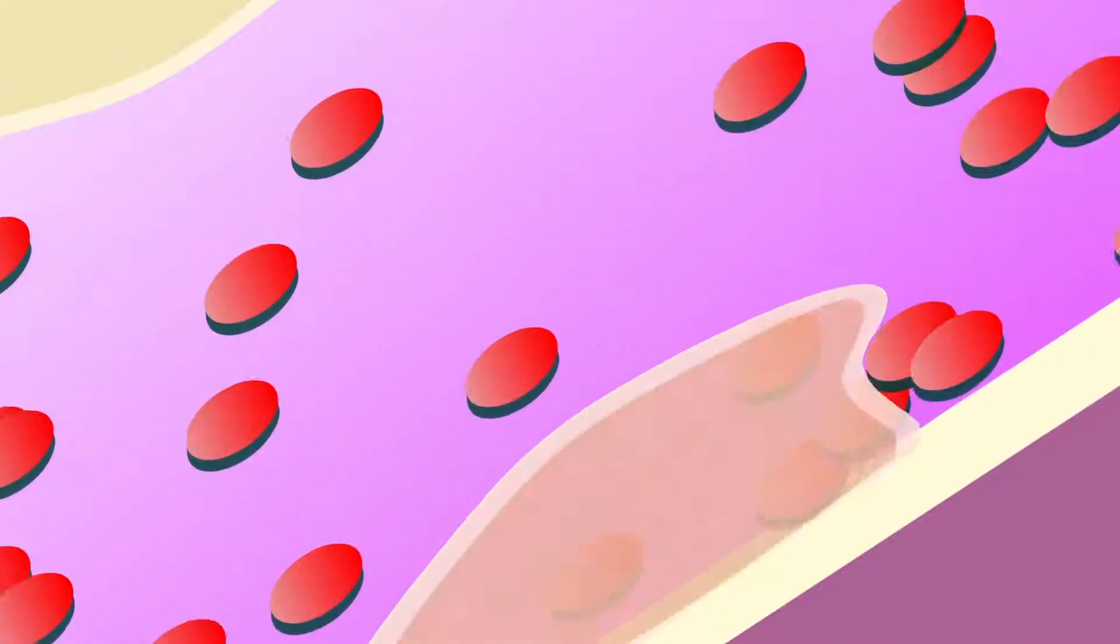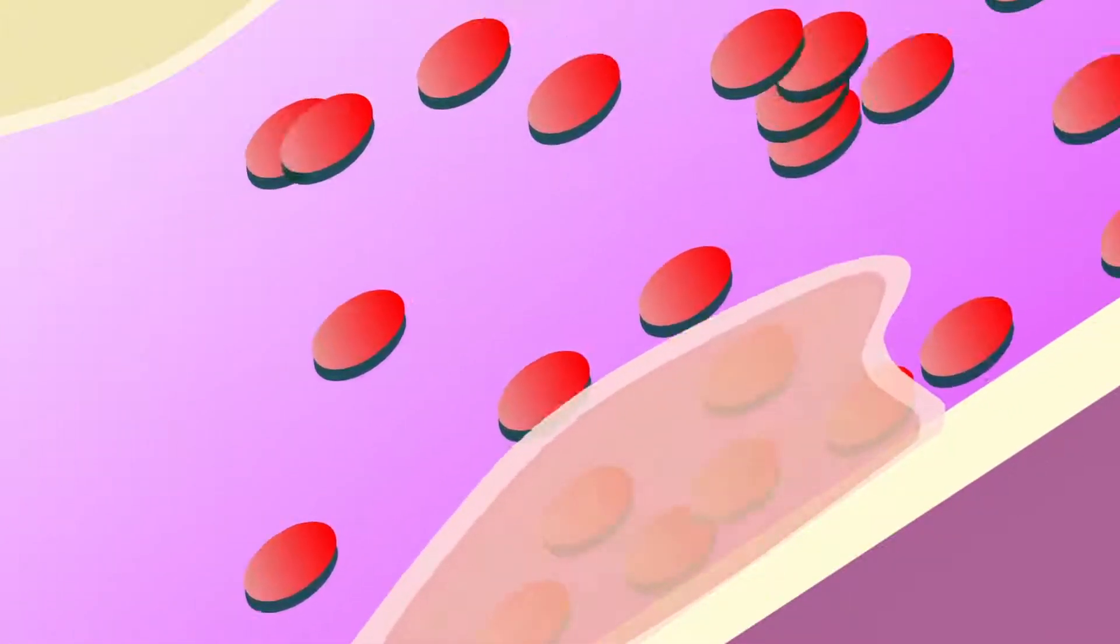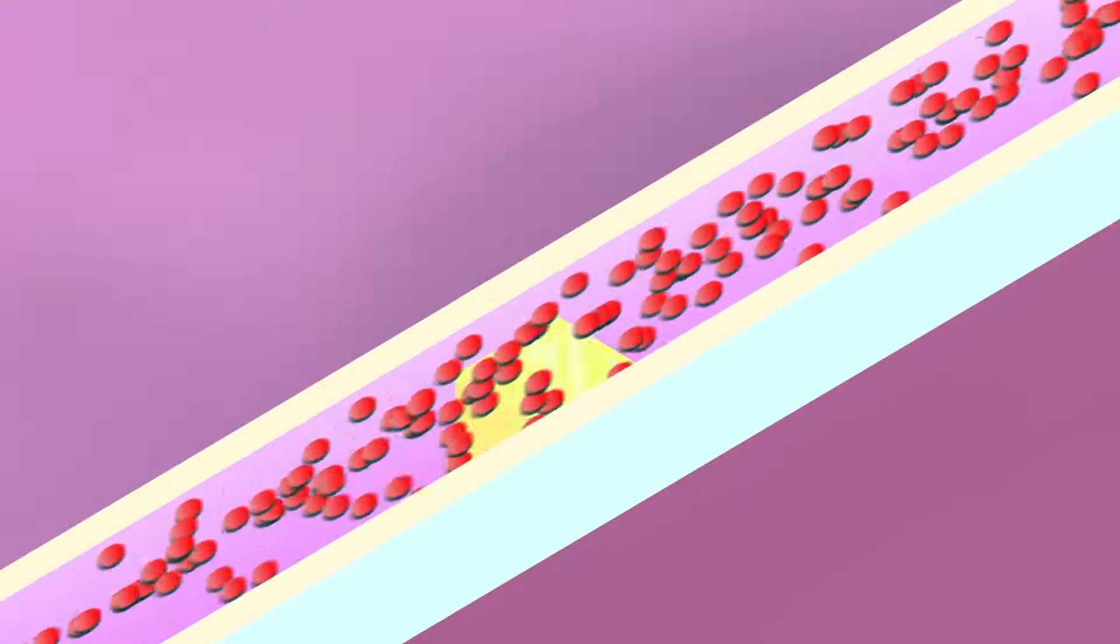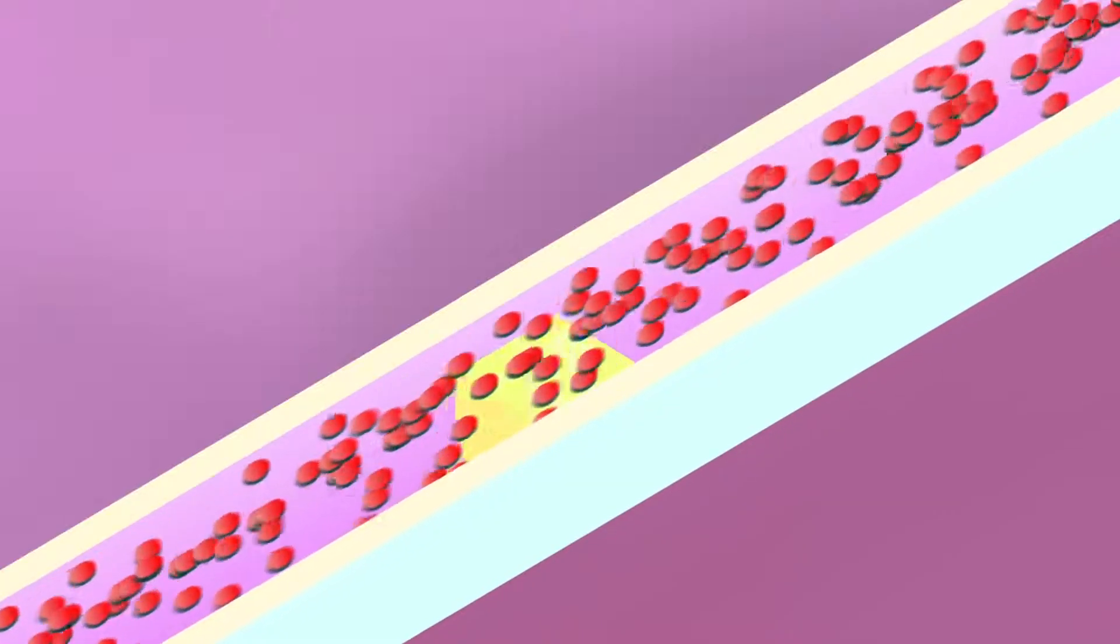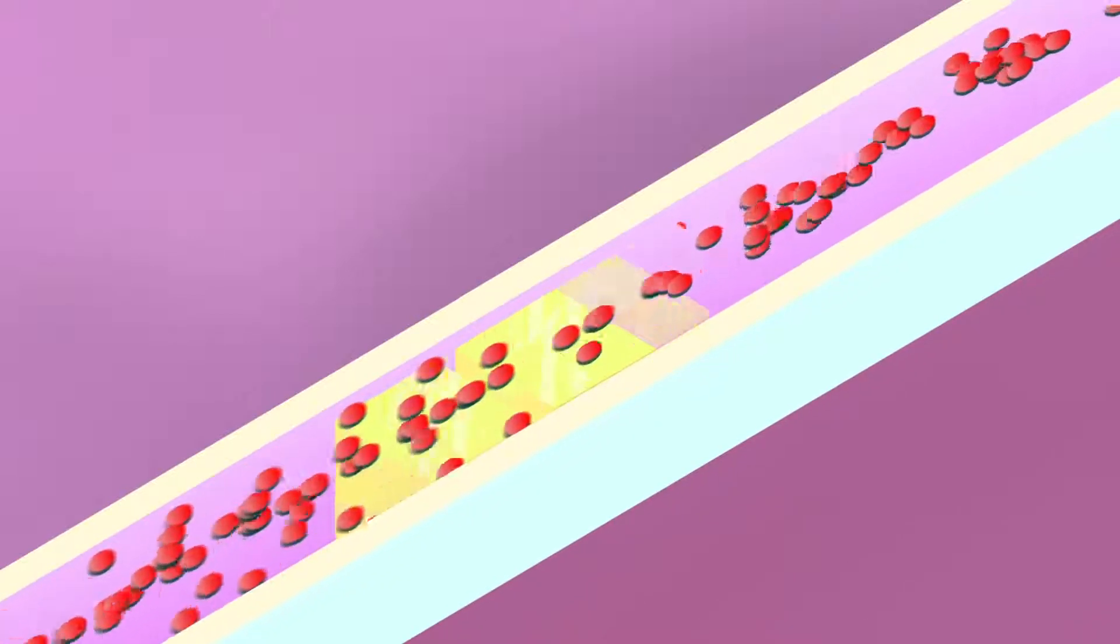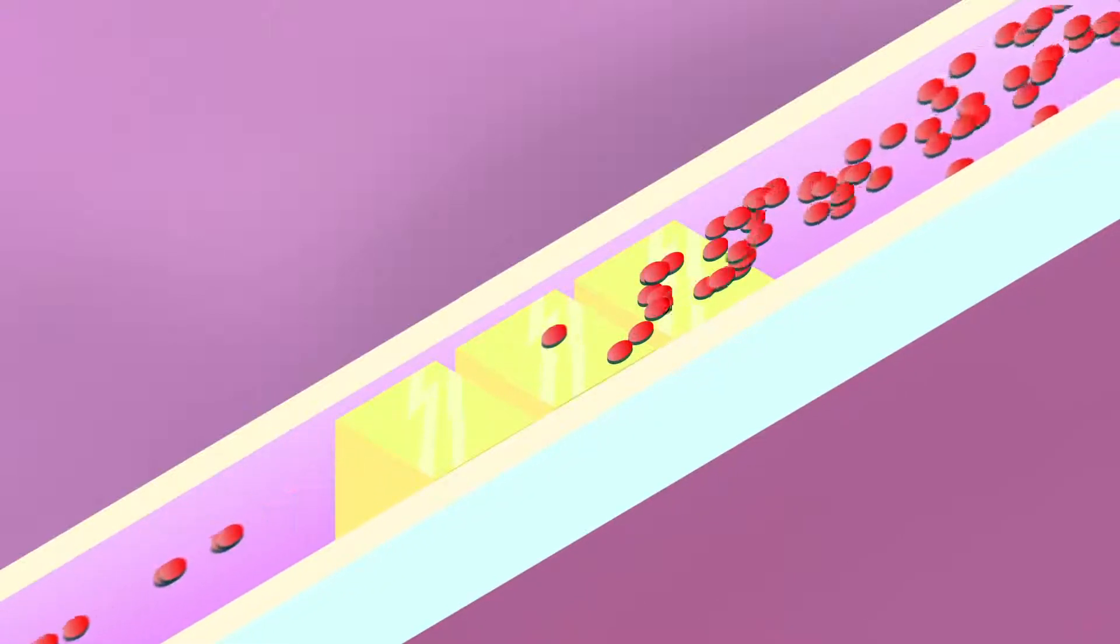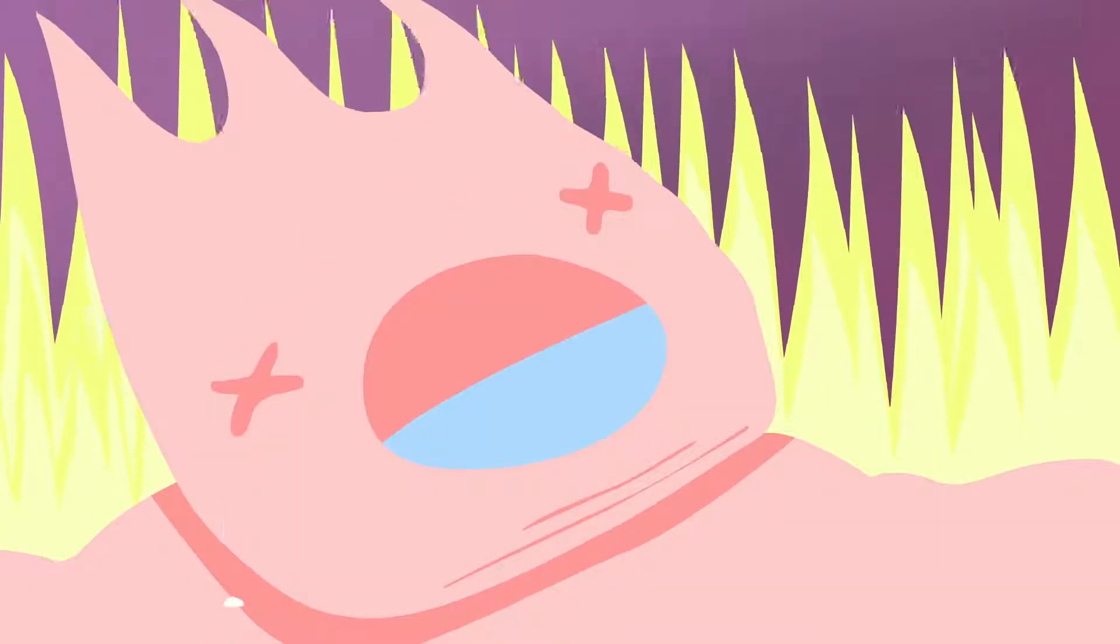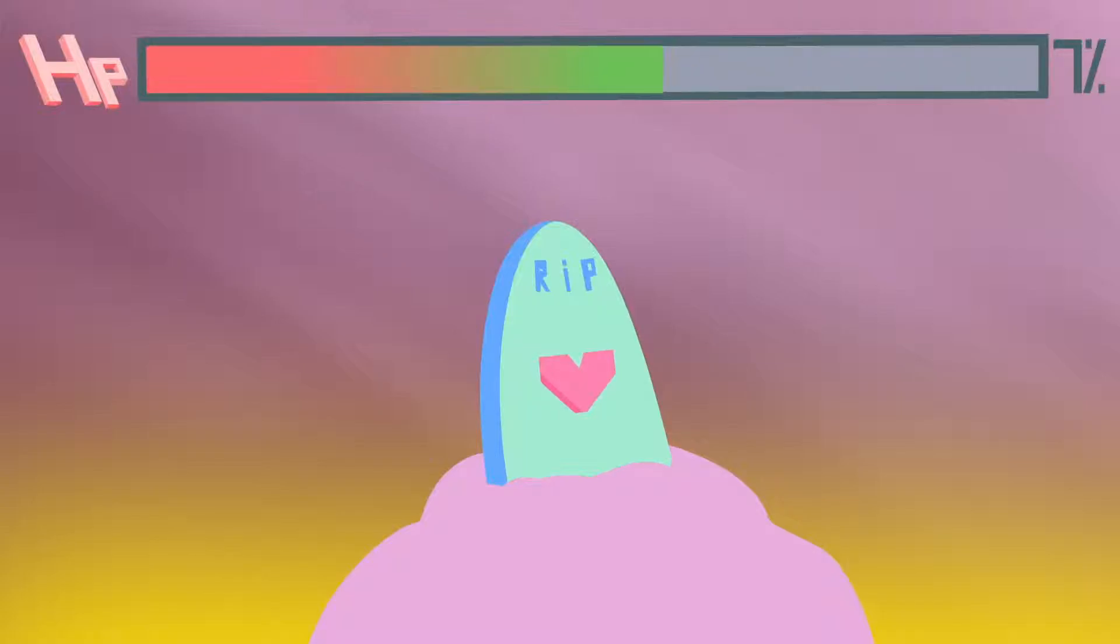Cortisol can also cause the endothelium, or inner lining of blood vessels, to not function normally. Scientists now know that this is an early step in triggering the process of atherosclerosis, or cholesterol plaque buildup in your arteries. Together, these changes increase your chances of a heart attack or stroke.